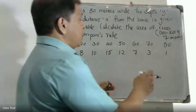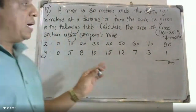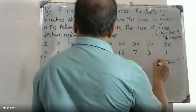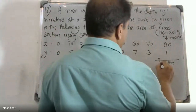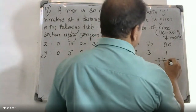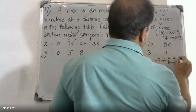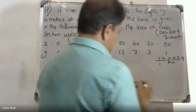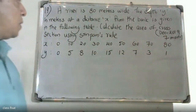Here is the river. The river is 80 meters wide. The depth starts at 0, then 5, then continues varying across the width — at 30, 40, 50, 60, 70, up to 80. This is the cross-section of the river, which is 80 meters wide.